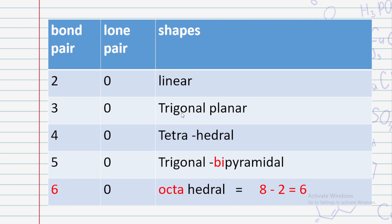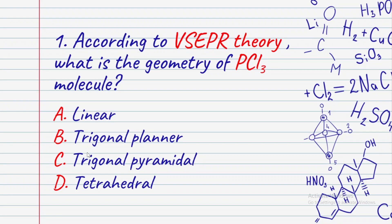Bond pairs — we count the bond pairs and lone pairs from the context. The compound has six bond pairs → octahedral. So now let's revisit the question: according to VSEPR theory, what is the geometry of the PCl3 molecule?